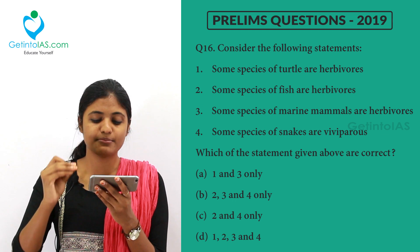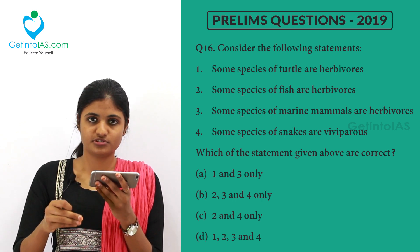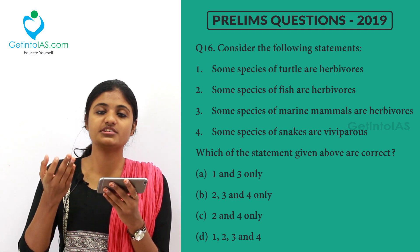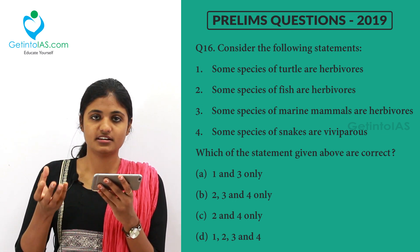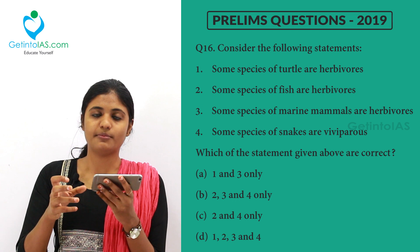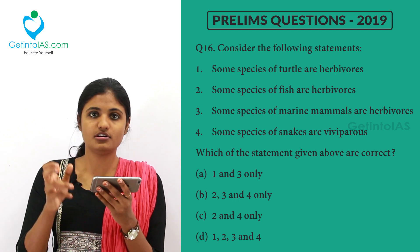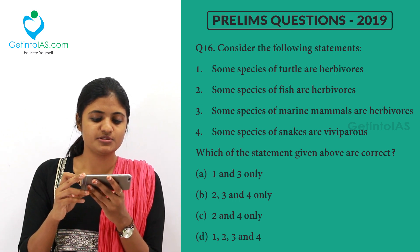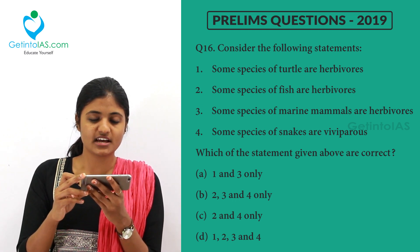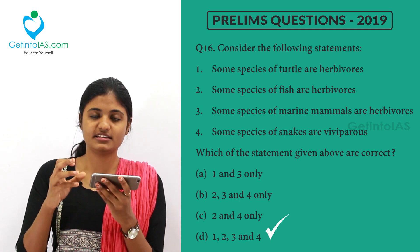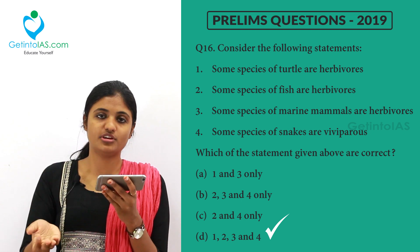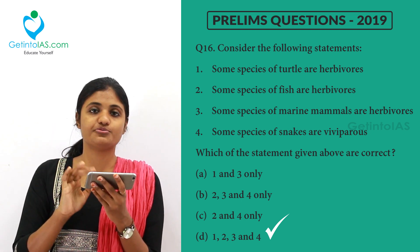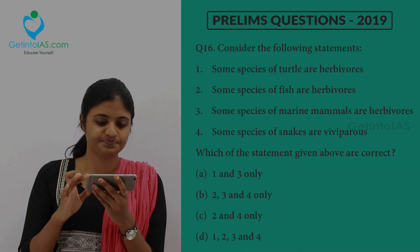Some species of marine mammals are herbivores — for example, the dugong or sea cow is a marine mammal and is also herbivorous. Some species of snakes are viviparous — that is, they give birth to young ones instead of laying eggs. So all the options are correct.